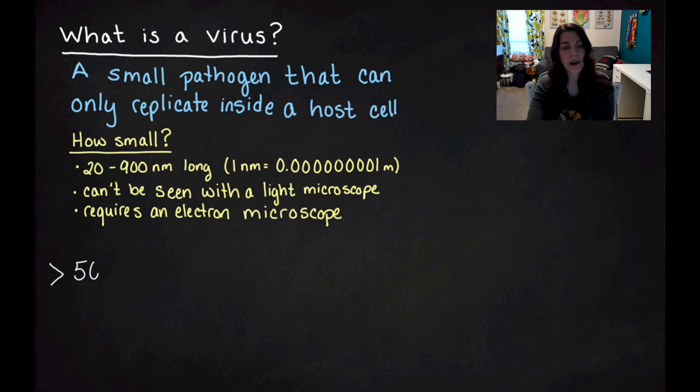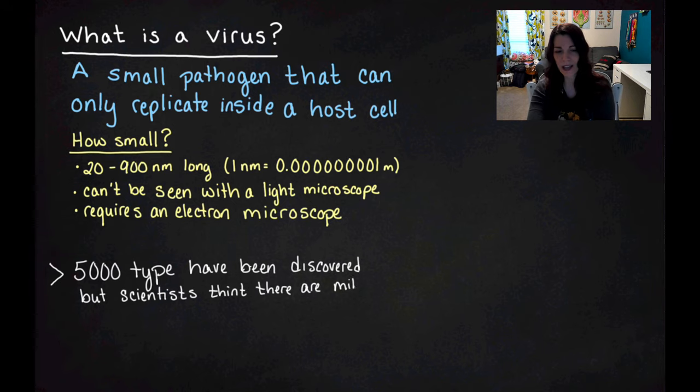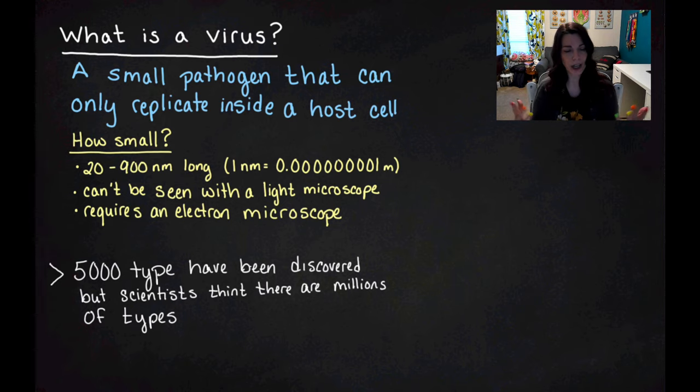There are more than 5,000 different types of viruses that have been discovered, but scientists actually think that there are millions of types of viruses and that they might actually be the most prolific, abundant type of organism on earth.